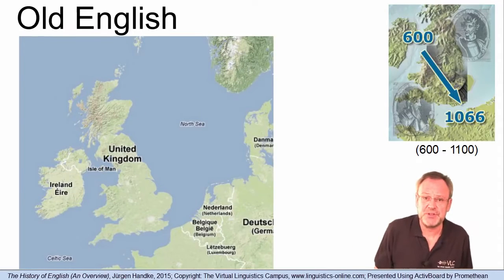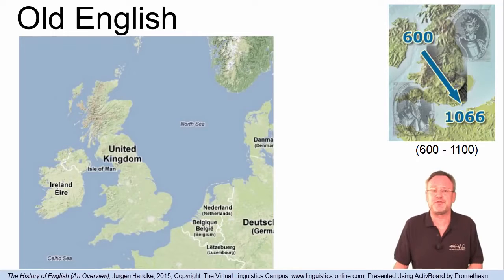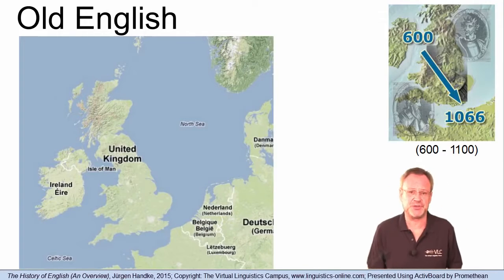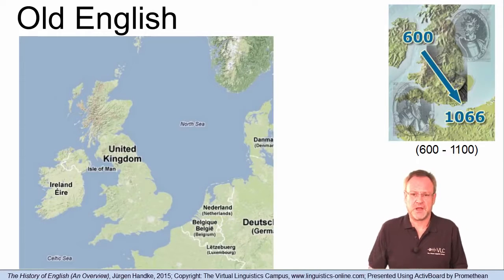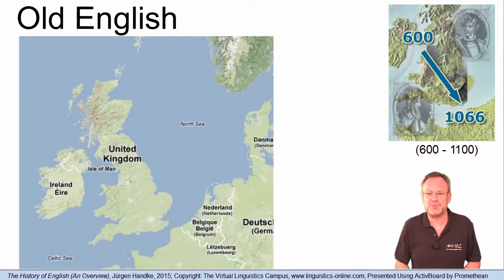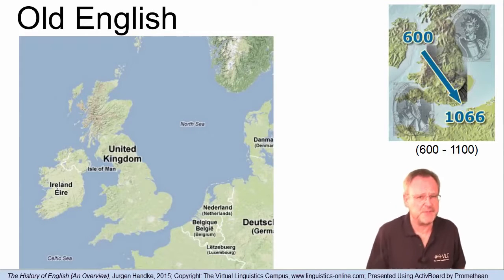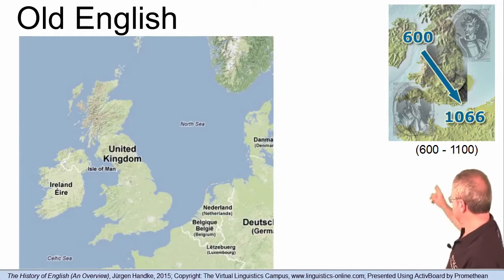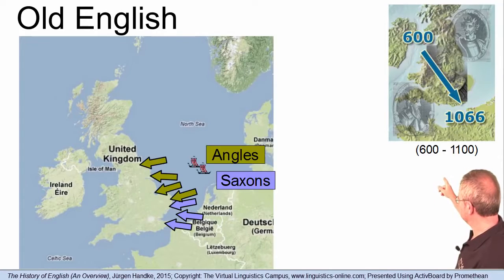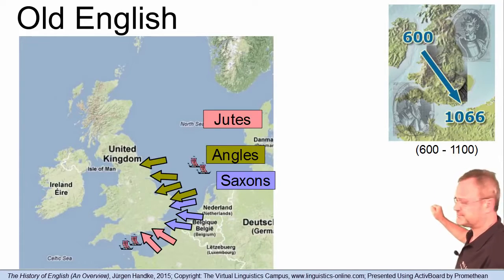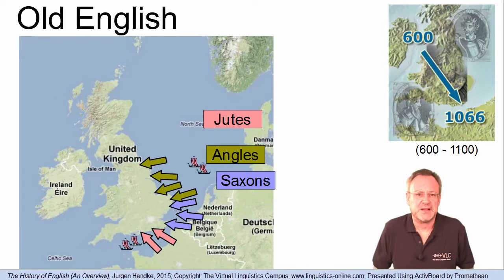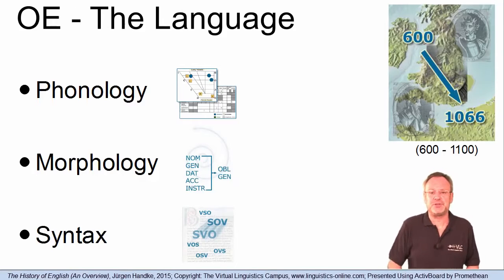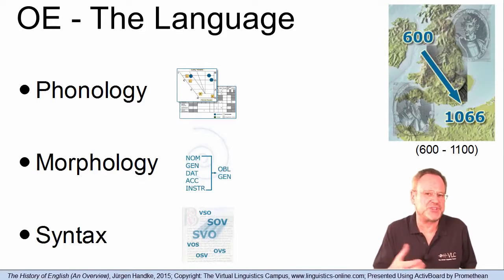The earliest period in the history of the English language is referred to as the Old English period. The origin of this Old English period goes back to the 5th century after Christ, when Germanic tribes invaded Britain. These tribes were the Saxons, the Angles and the Jutes. Linguistically, the Old English period is generally defined as from 600 to 1100 after Christ.